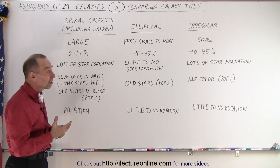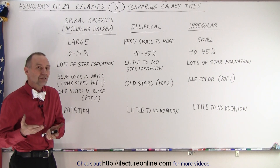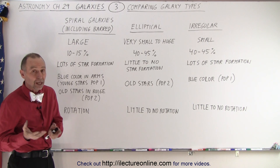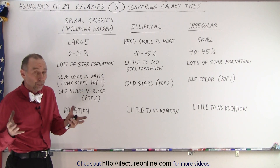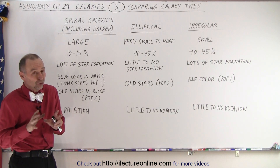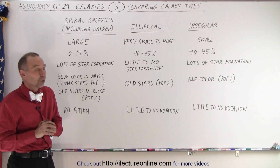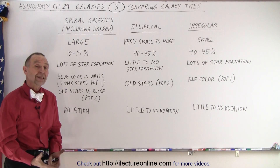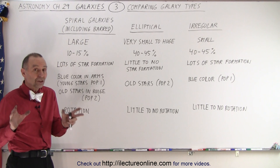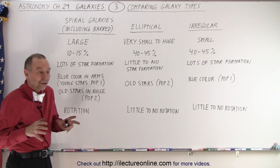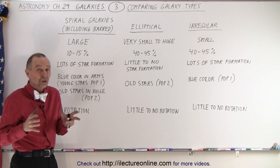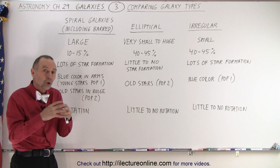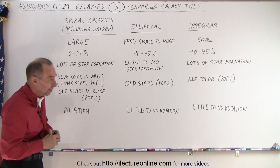Irregular galaxies are typically small galaxies. Our Large Magellanic Cloud and Small Magellanic Cloud are both irregular galaxies, and they're much, much smaller than the Milky Way. In our local group, besides the three large spirals, we have almost 50 either small ellipticals or small irregular galaxies.